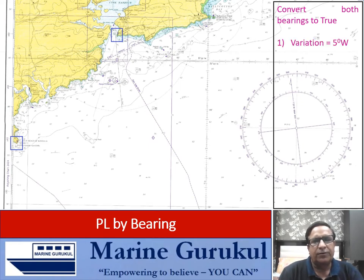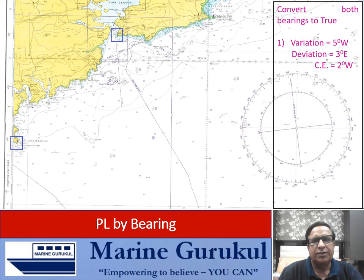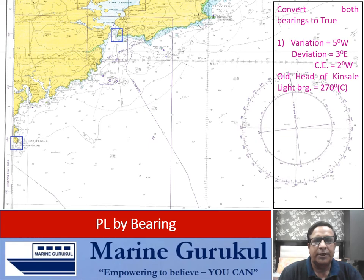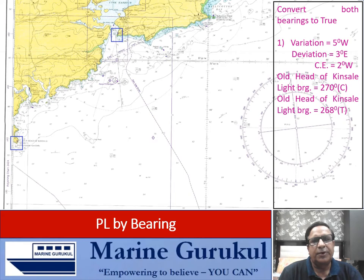For the first case, variation is 5° west and deviation is 3° east, so compass error is the algebraic sum: 2° west. The compass bearing of Old Head of Kinsale is 270°. Using the rhyme — error west, compass best; error east, compass least — since error is west, compass is greater than true, so the true bearing of Old Head of Kinsale light is 268° true.